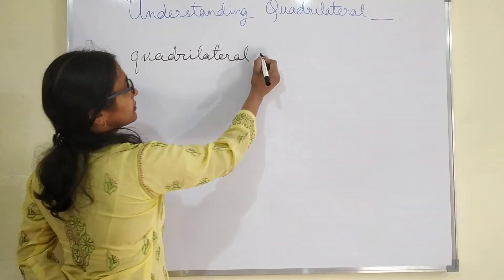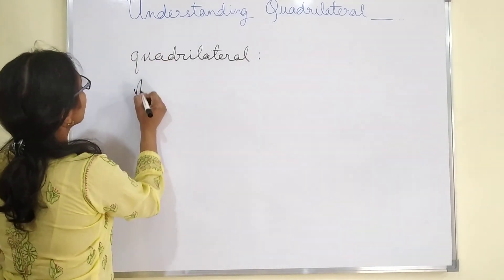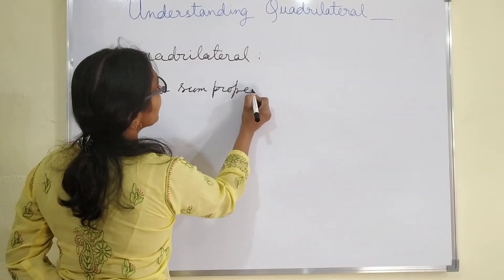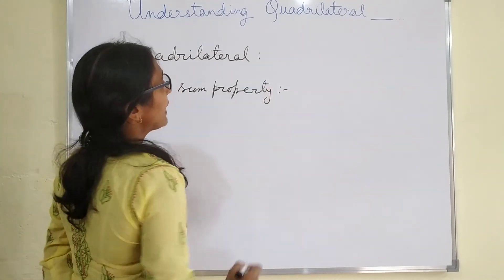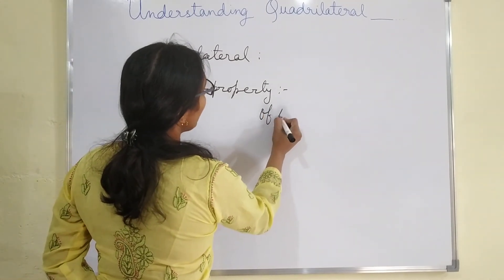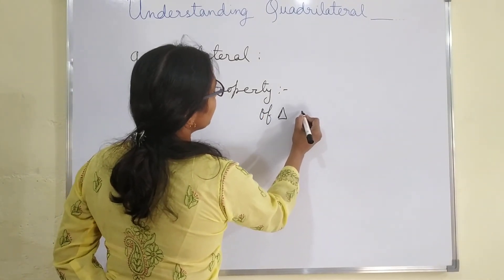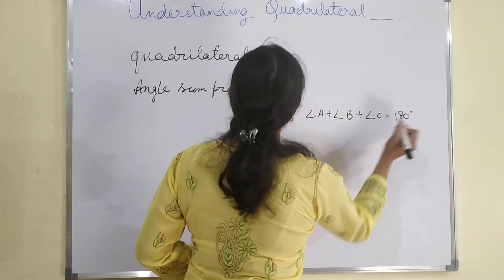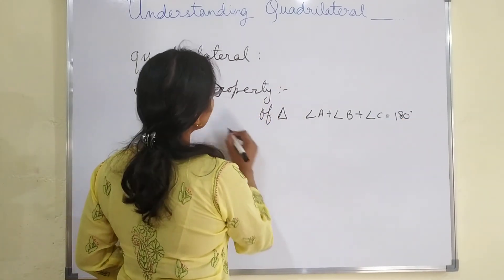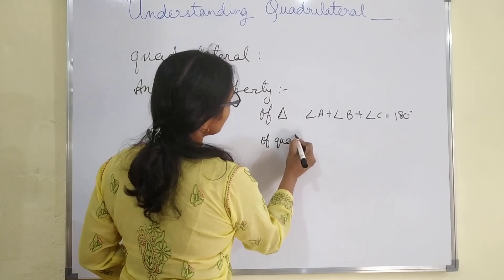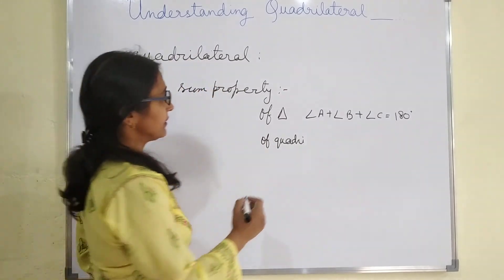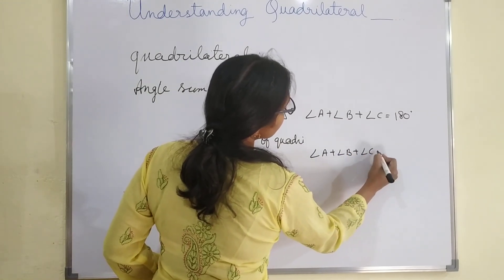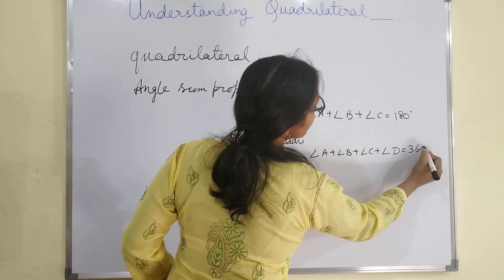Now, angle sum property, which you studied about in earlier classes. The angle sum property of a triangle is 180 degrees, meaning angle A + angle B + angle C = 180 degrees. And the angle sum property of a quadrilateral is 360 degrees, meaning angle A + angle B + angle C + angle D = 360 degrees.